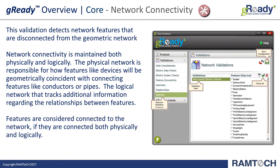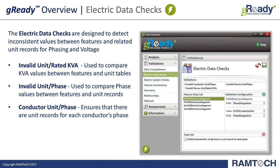We also have our network validation, which looks for disconnected network features. This is different from the disconnected points check — it examines the logical network present behind the scenes of the geometric network. If a device is snapped and part of the network but someone used the disconnect button and never reconnected it, the feature would still be coincident to the line it's snapped to, but as far as the logical network goes it is disconnected. We are able to detect and report on those instances as well. All of these contribute to ensuring your data is connected and as clean as possible when making the jump from the geometric network to the utility network.